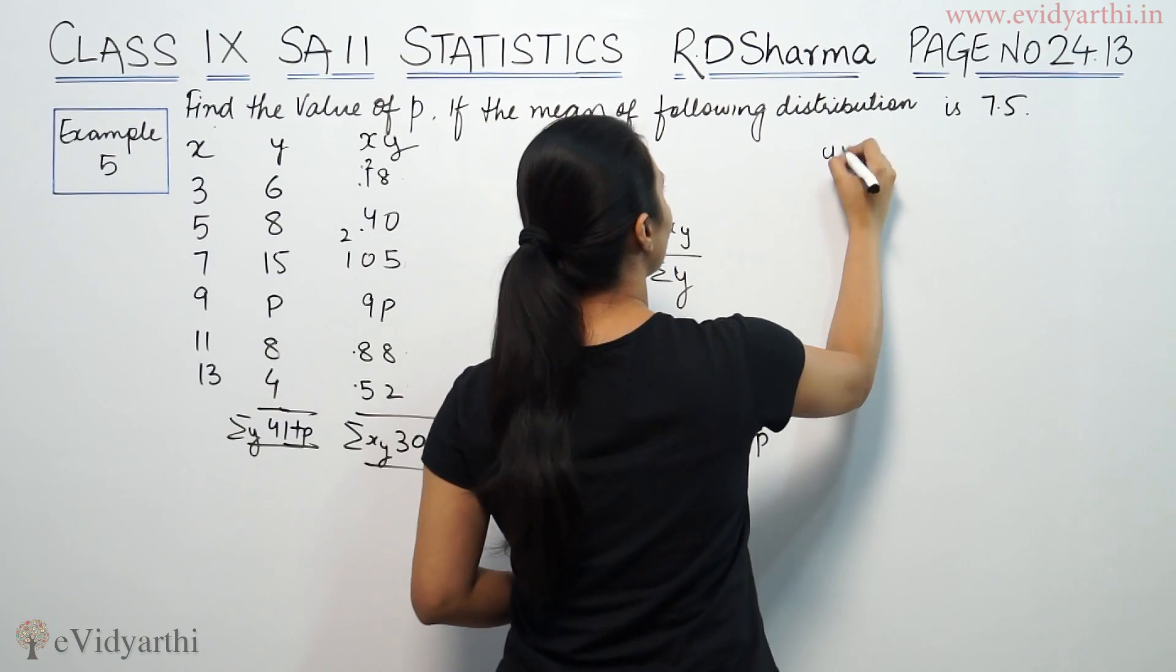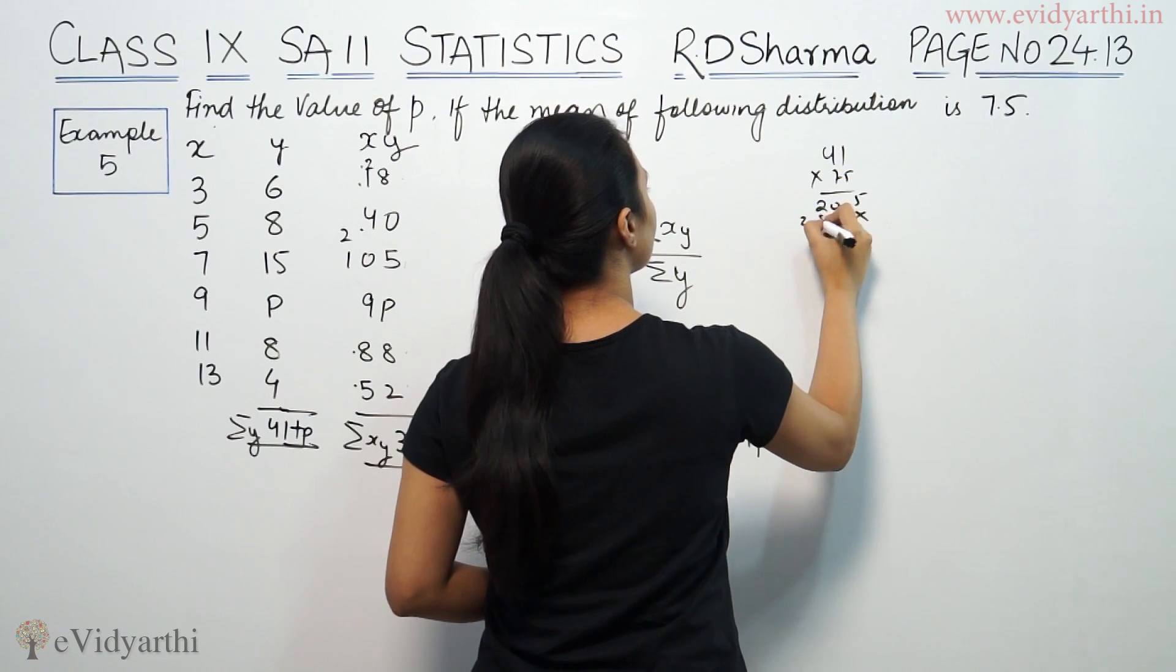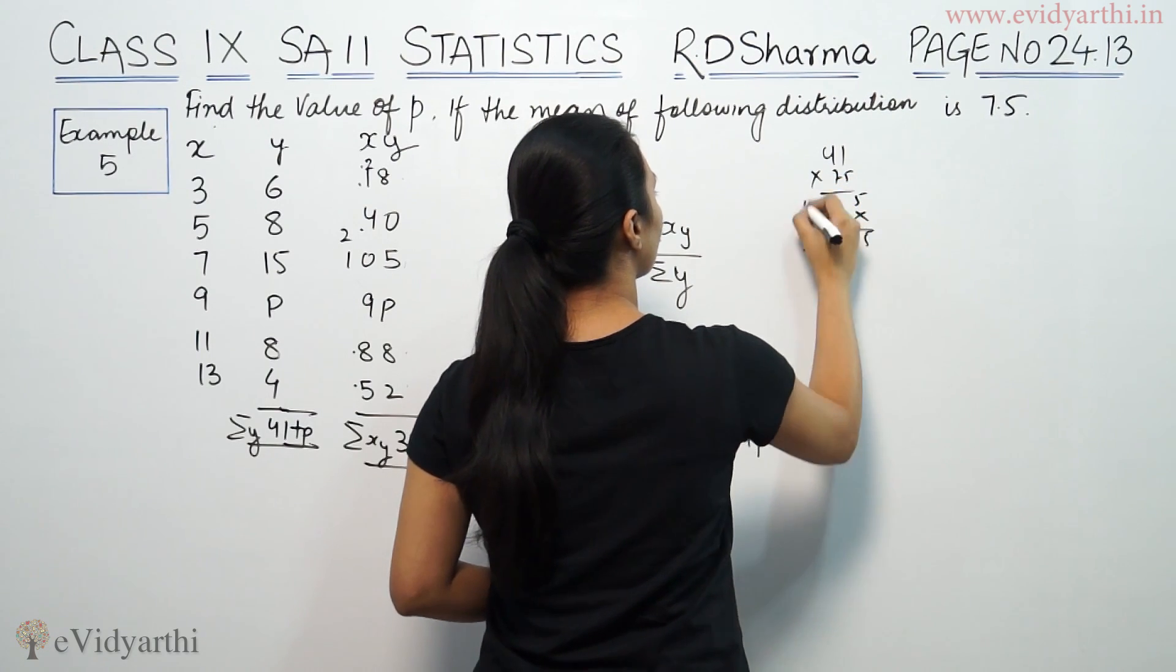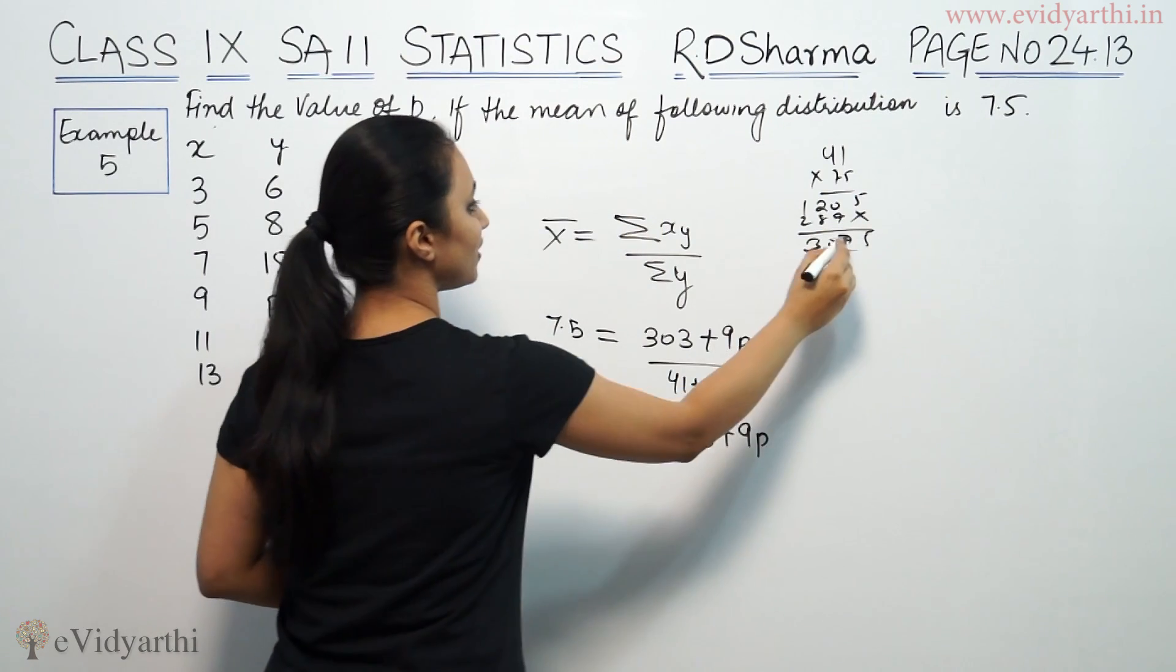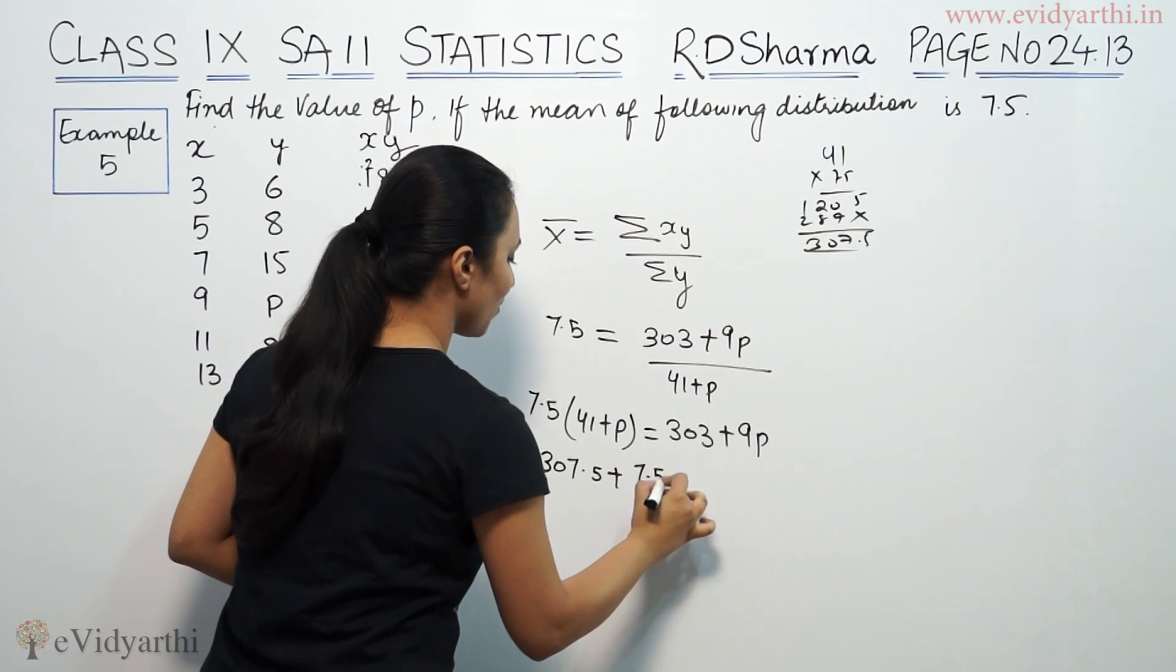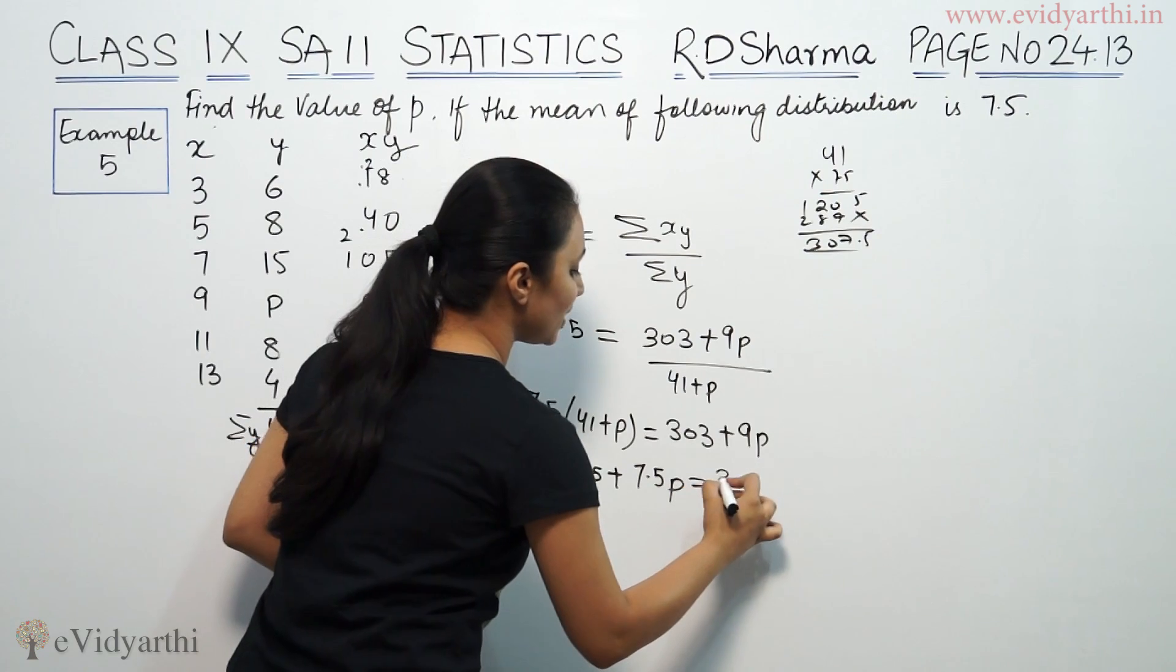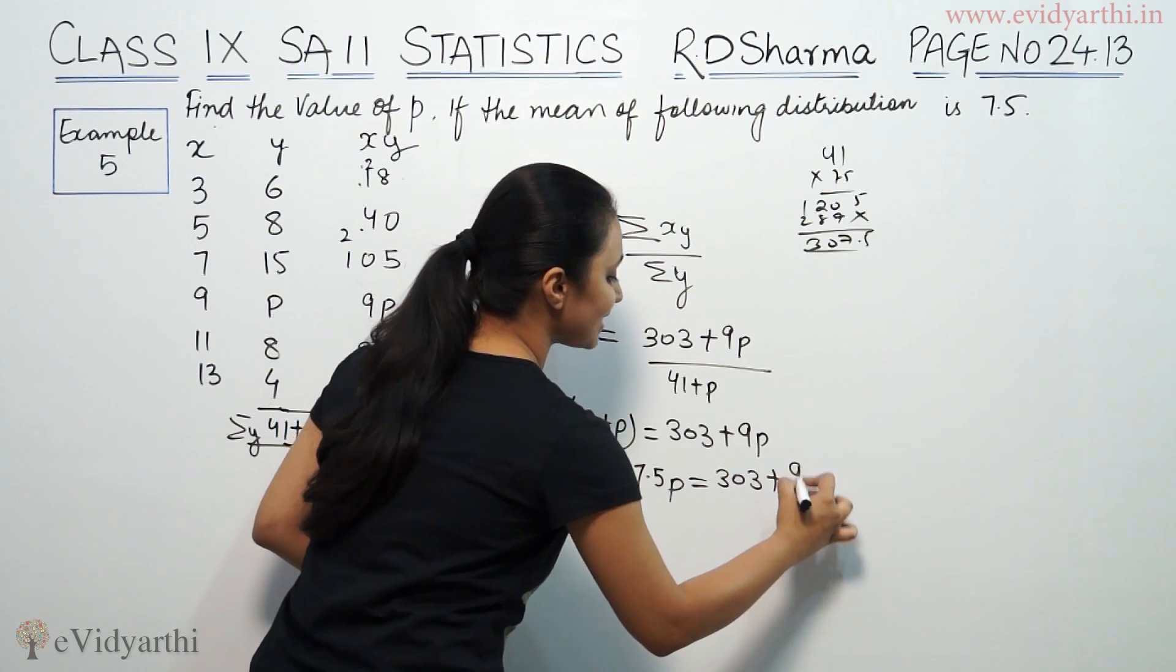This will be 7.5 times 41 is 307.5. Now, we have a decimal. 307.5 plus 7.5P equals 303 plus 9P.